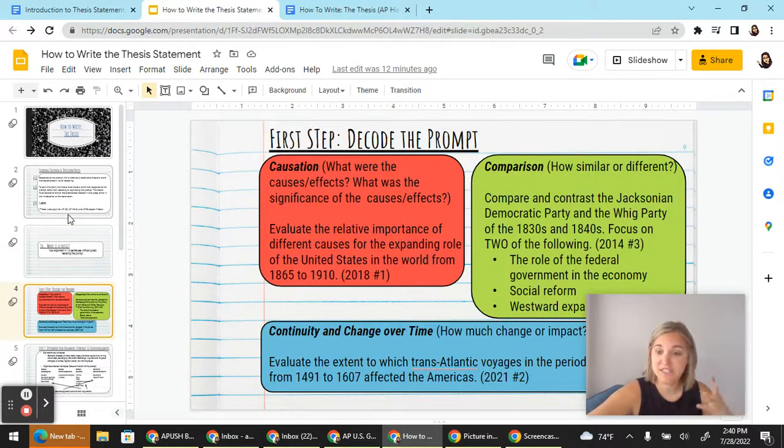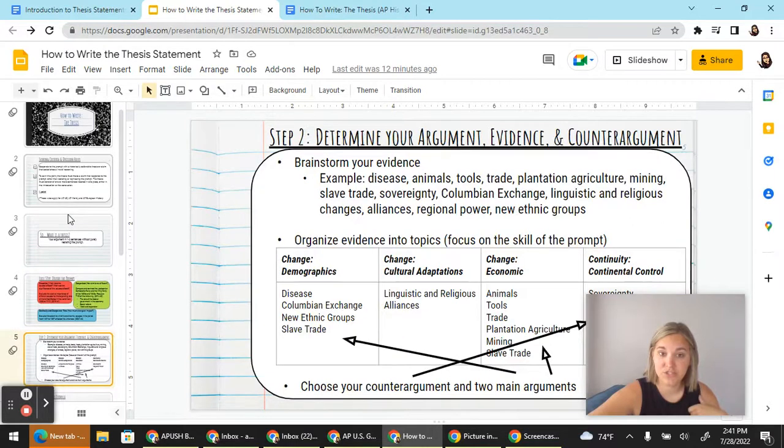So first you want to decode the prompt determine whether it is causation, comparison, continuity, and change over time and then your second step you're going to have students do is to determine their argument, evidence, and counter argument.